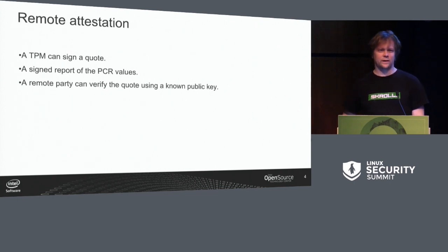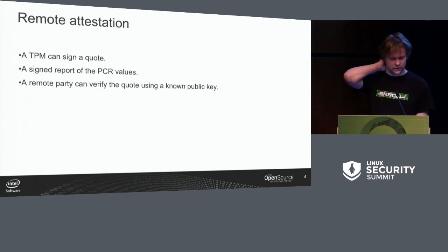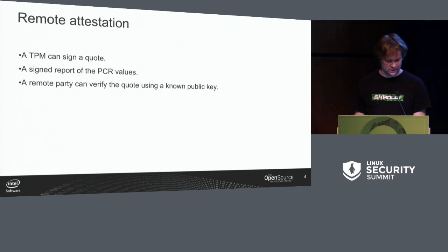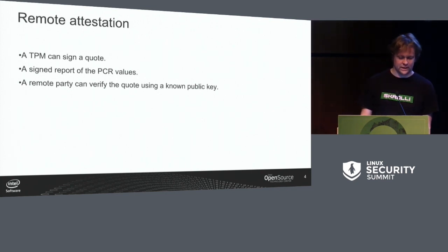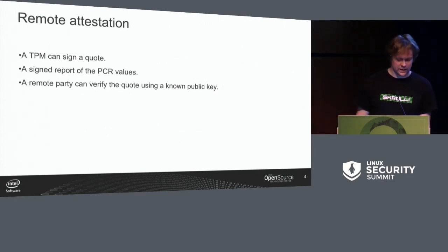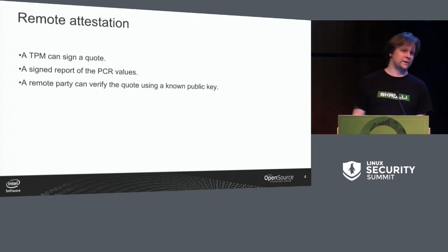Remote attestation is essentially a procedure where the TPM signs these measurements using a known certificate that is known to the other party, and the remote party can then verify these measurements using the public key from the certificate. That way the remote party can know whether the system is in a valid or invalid state.